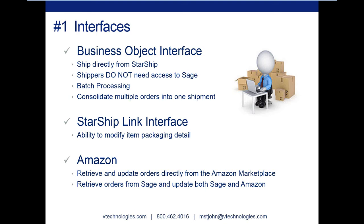With the business object interface, there are two advantages over the Starship link. First, we can do batch processing — you can select any number of orders and with a couple clicks of the mouse, have all your shipping documents and labels print out for all selected orders. Second, with the BOI you can consolidate multiple orders into one shipment. Shippers can see they're shipping to company ABC, notice four other orders going to the same company, select them all, and put them into one shipment, saving time and money for the shipping department.